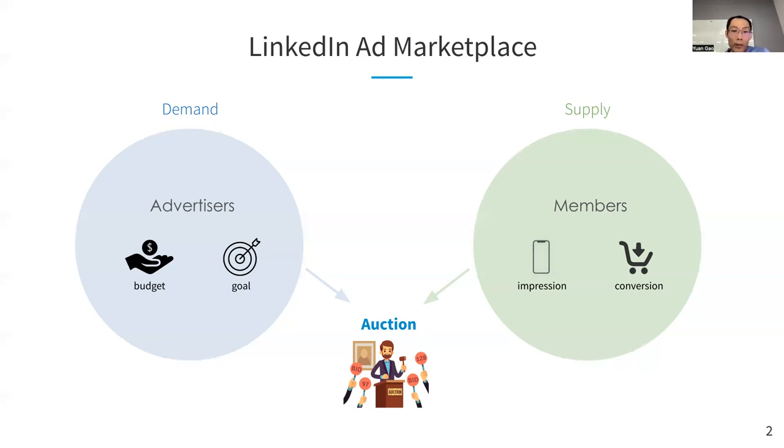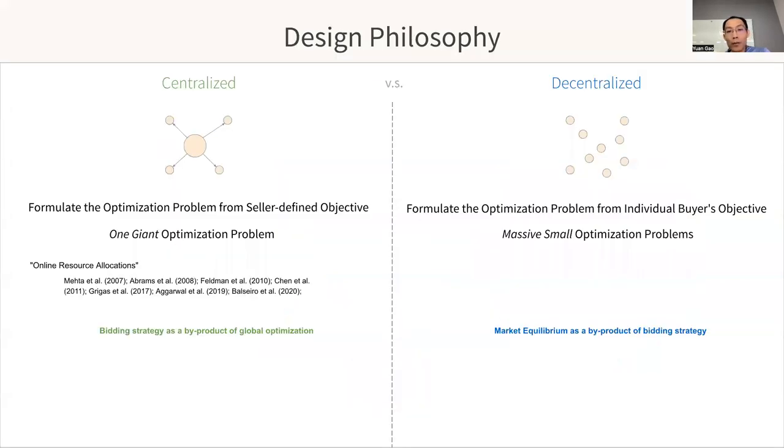Next, I will talk about how we design the automated bidding system. On a high level, there are two different sorts of design philosophies, one centralized and the other decentralized.